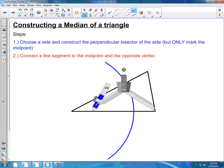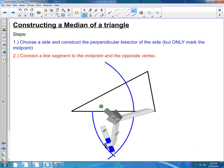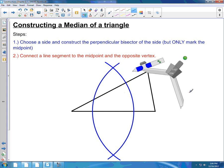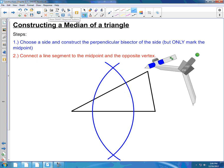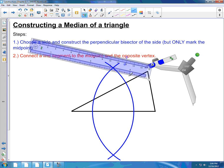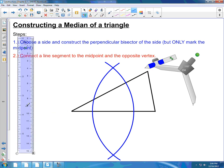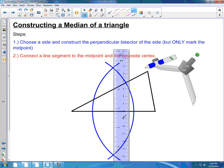Alright, so you can see I got the two intersection points. Now, instead of drawing a line immediately, I'm just going to take my ruler and line it up here and just mark where that midpoint is.